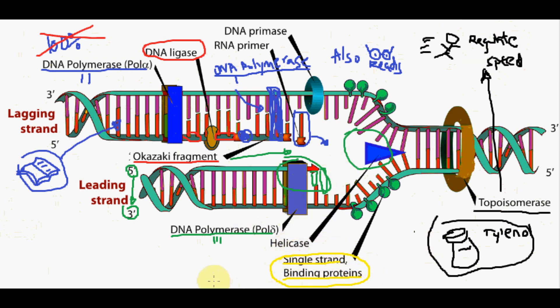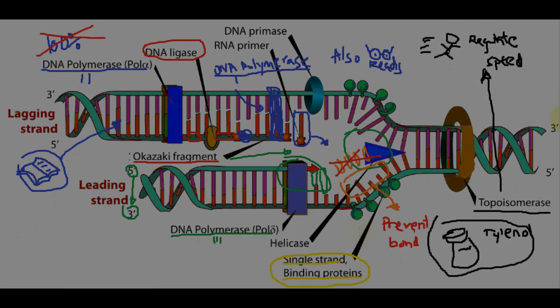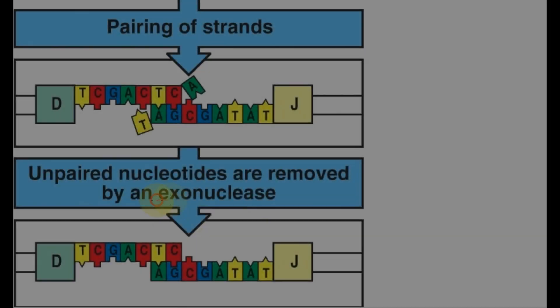Single-stranded binding proteins are enzymes that are used to help stabilize single-stranded regions of the DNA where it is unwound. This is important as it helps prevent premature bonding of complementary base pairs and protects DNA from being digested by the nucleases.